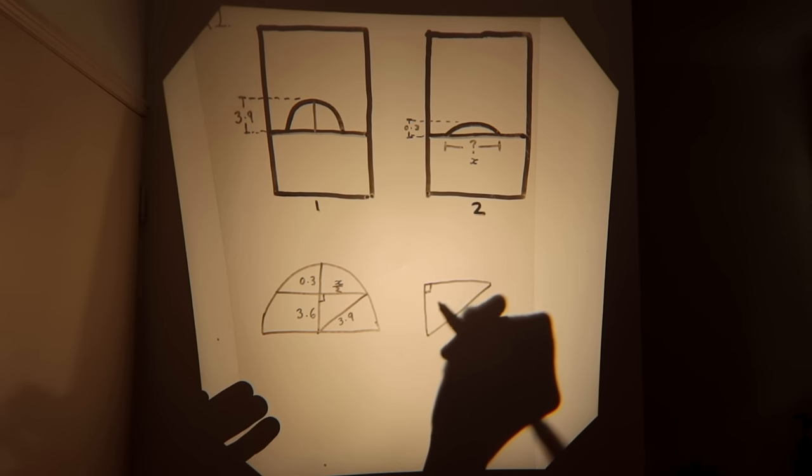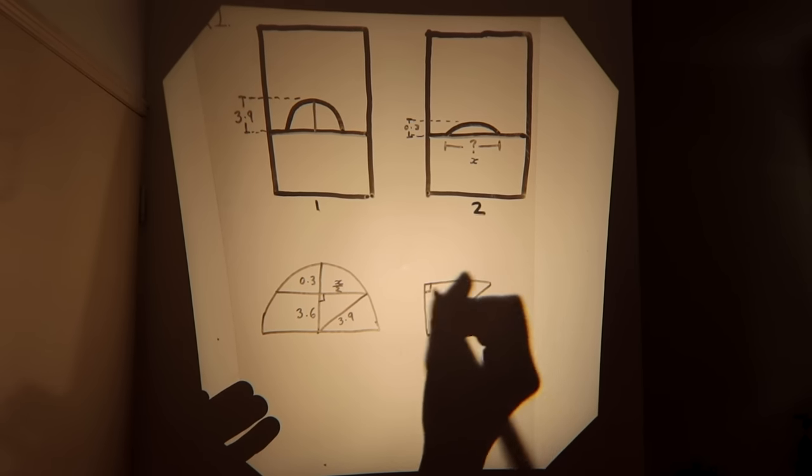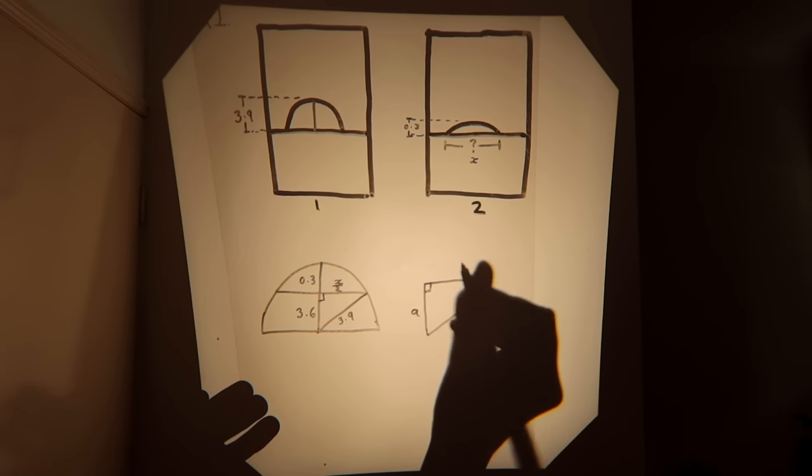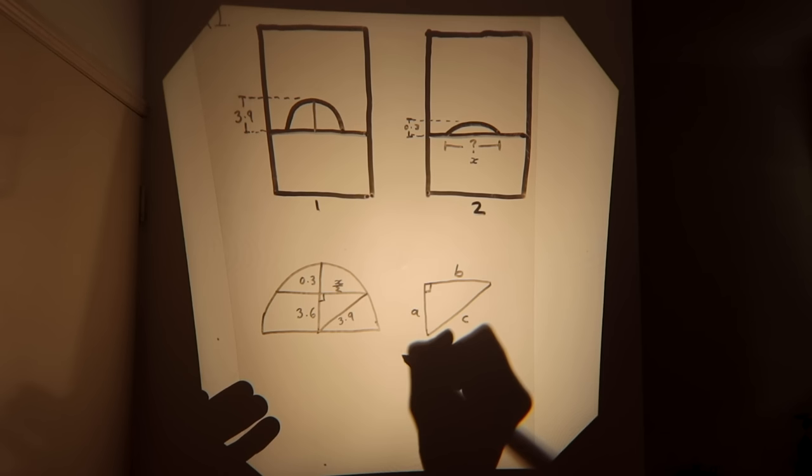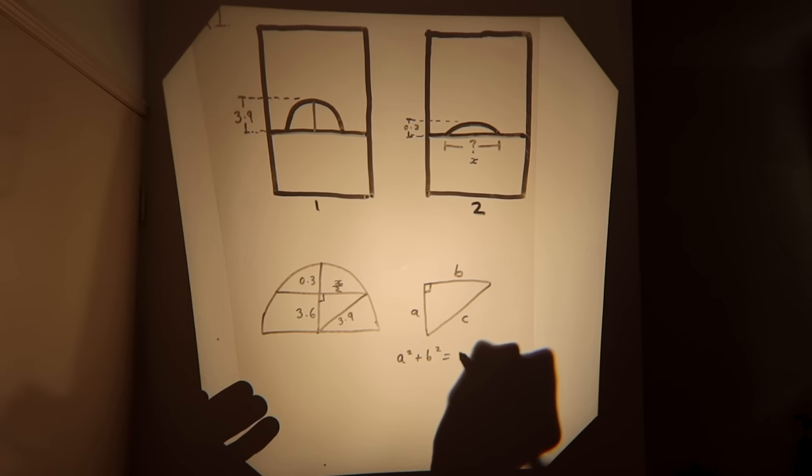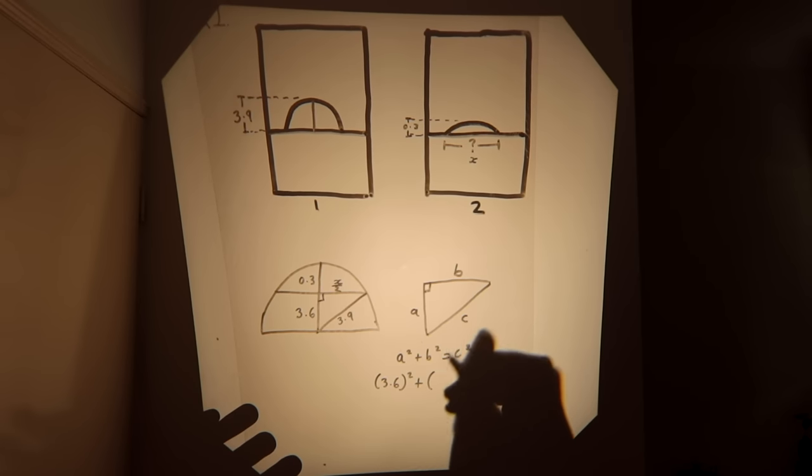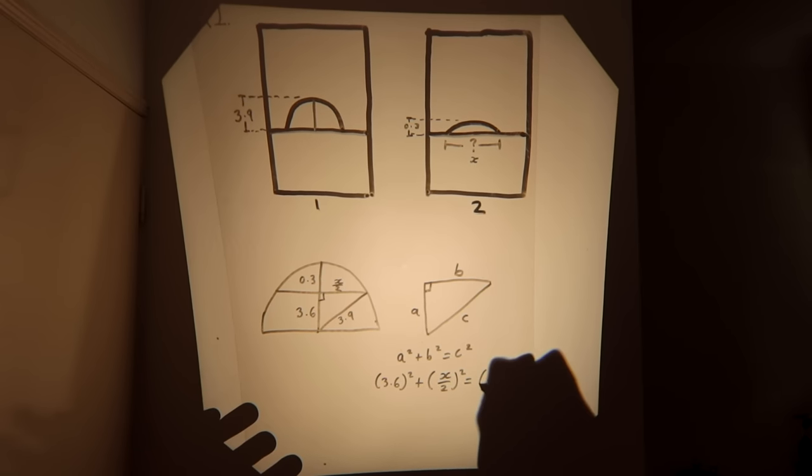For that we're able to use the Pythagorean theorem. If this is our right angle triangle and one of the shorter sides is a, the other shorter side is b, and the hypotenuse is c, then the Pythagorean theorem says that a squared plus b squared is equal to c squared. For us, a is 3.6, our b is x over 2, and our c is 3.9.